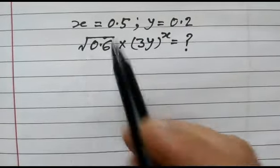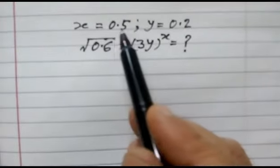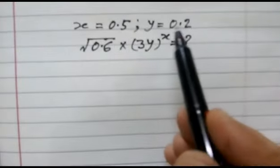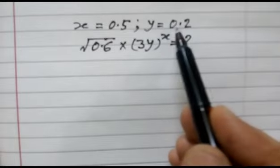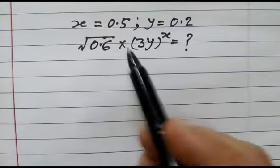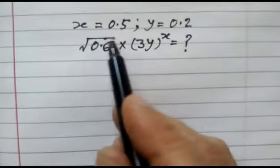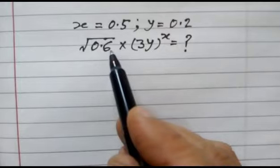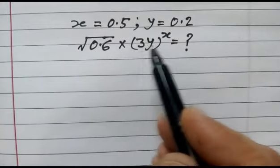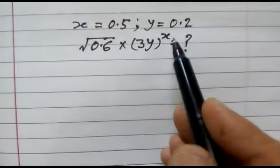Hi friends, we have given x is equal to 0.5 and y is equal to 0.2. We have to find out the value of square root of 0.6 into 3y, whole power x.